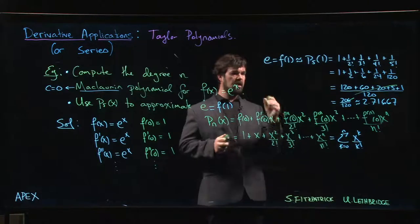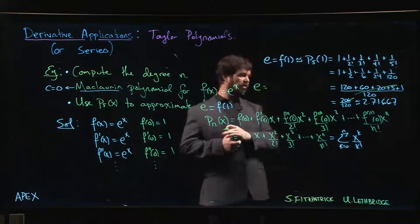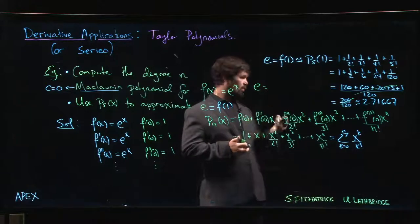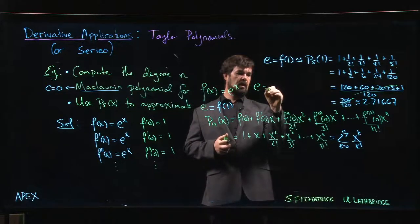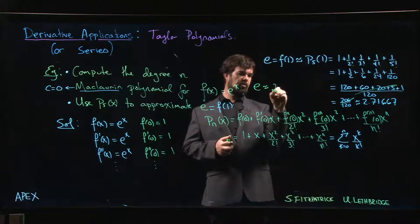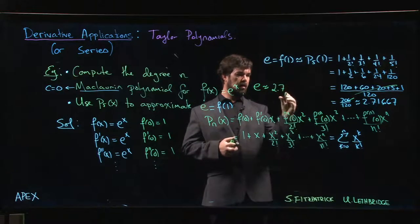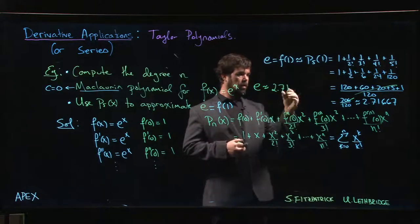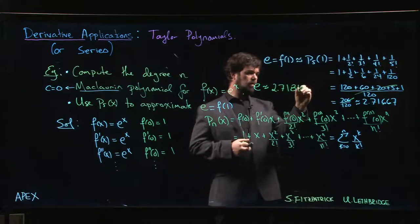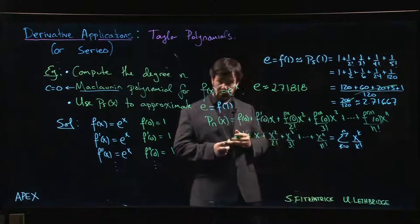Which is pretty good. The calculator value, if you ask the calculator to give you e up to 4 or 5 decimal places, what you're going to get is—and again, it's only approximate because it goes on forever—but you get like 2.71828, I think is how e starts.